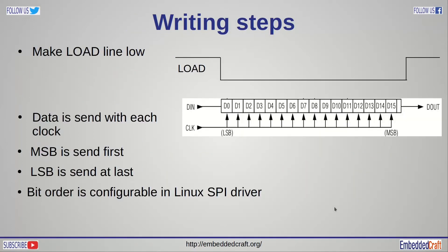To write 16 bits to SPI device, we need to follow these steps. First make load line 0 and then data is send on each clock. MSB is send first and LSB is send at the end. Bit order is configurable in Linux SPI driver.